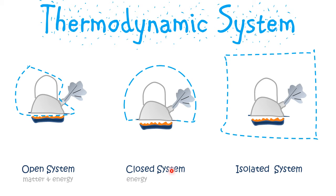In the second example, we have drawn a boundary around the kettle and the steam leaving the kettle into the atmosphere. In this case, there is no matter exchange with the atmosphere because the atmosphere is a part of the system, whereas there is energy exchange with the surroundings.